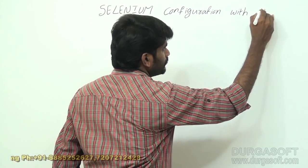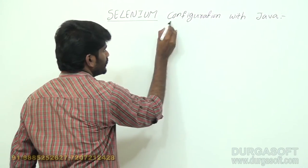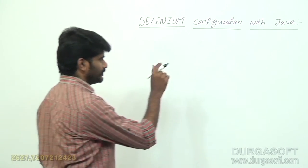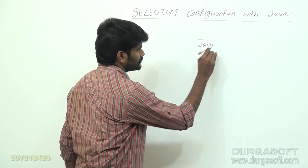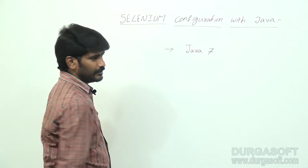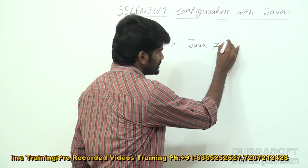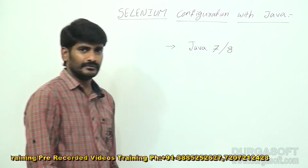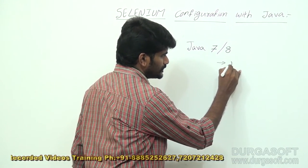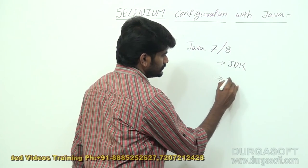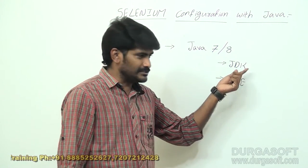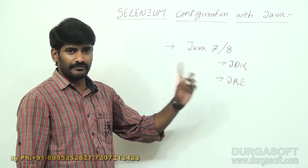To configure Selenium, first of all we should have Java installed in our machine. Suppose if Java 7 is available in your machine, no problem, you can use Java 7. Otherwise you can install the latest one, Java 8. Once you install Java in your machine it will create two folders: JDK and JRE.